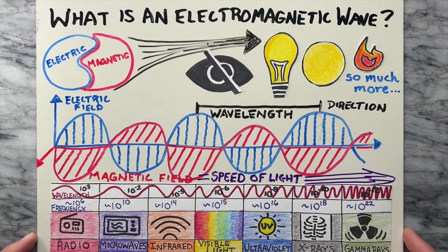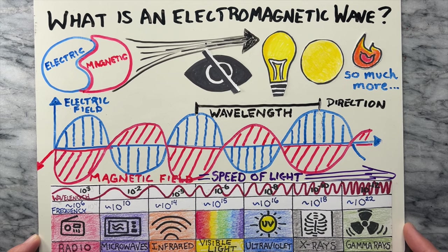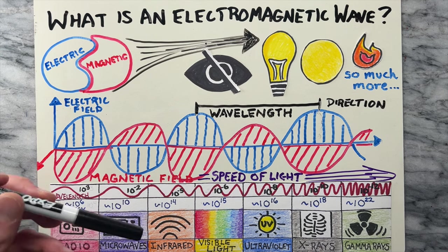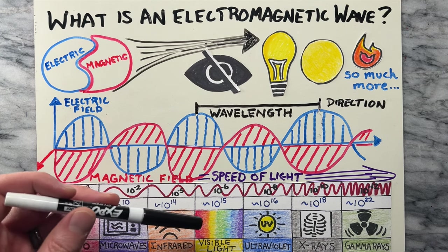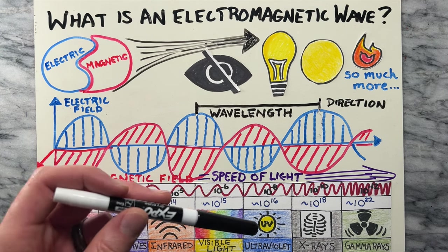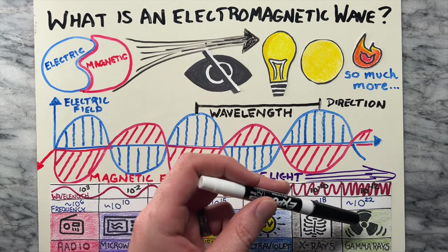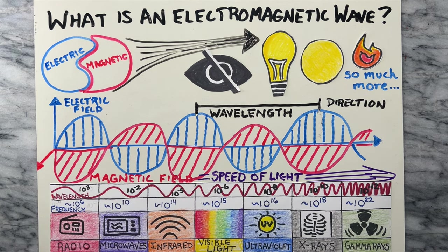The family of electromagnetic waves is called the electromagnetic spectrum. This spectrum includes various types such as radio waves, microwaves, infrared, visible light, ultraviolet, x-rays, and gamma rays. Each type has unique properties and uses — that's what we'll talk about next.